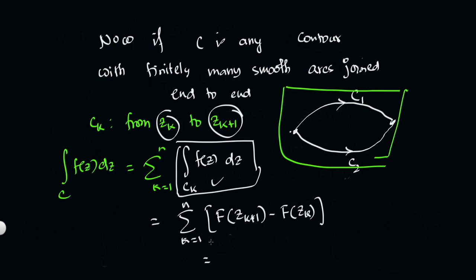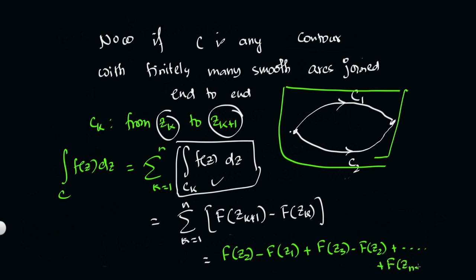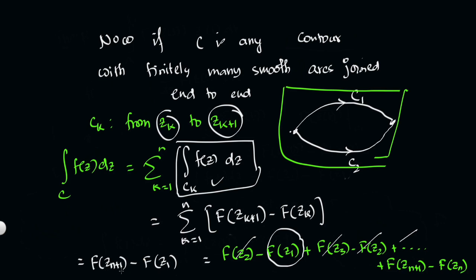Opening the summation: for K=1 we get F(z2) minus F(z1), plus F(z3) minus F(z2), and so on, up to F(z_{N+1}) minus F(z_N). The intermediate terms cancel telescopically — z2 cancels, z3 cancels, and so on. Finally the summation reduces to F(z_{N+1}) minus F(z1), which is F(z2) minus F(z1) in the original notation.